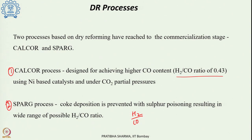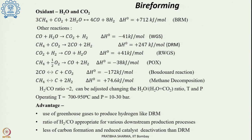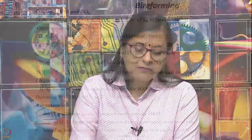Sulfur poisoning in SPARG also reduces catalyst activity. Moving on, in bi-reforming the oxidants used are both steam and carbon dioxide. The feedstock methane reacts with both CO2 and steam to produce syngas with an H2/CO ratio of 2. This is the primary reaction in bi-reforming of methane, though several other reactions can also occur.